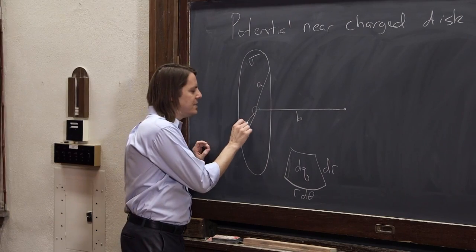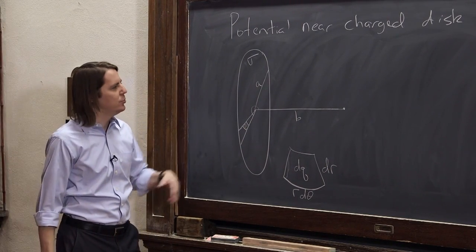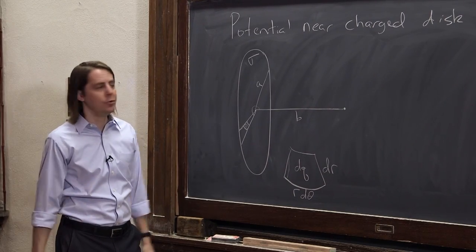So our differential charge dq is just the charge density times this area, and this area is r dr d theta. That's how we usually say it, dr times r d theta. So we're going to take each of these little differential surfaces, little da's, turn them into dq's, and just do our integral.